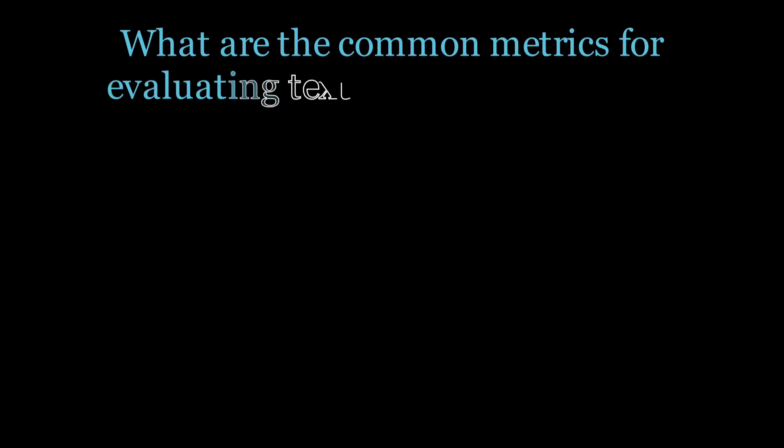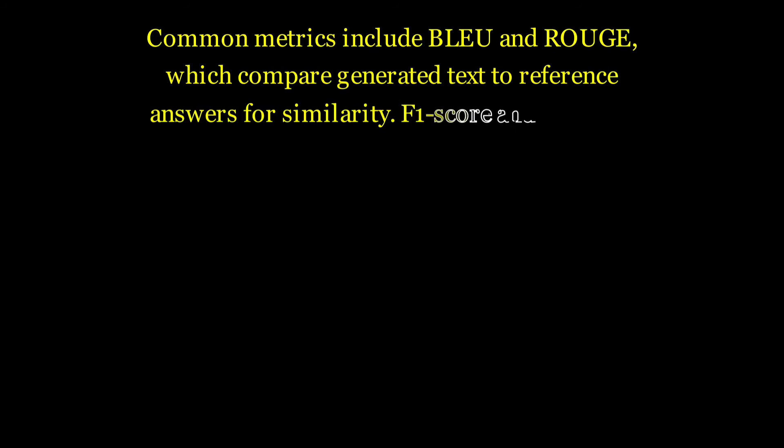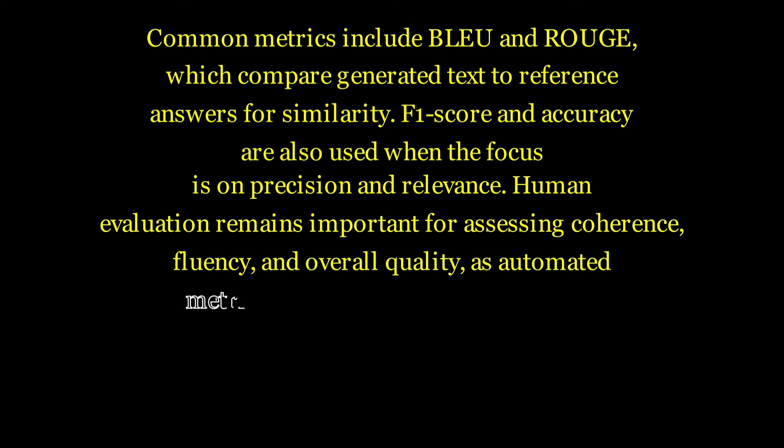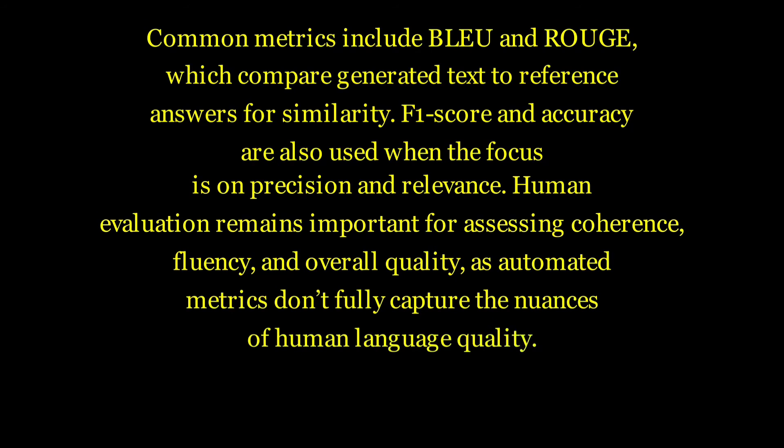What are the common metrics for evaluating text generation models? Common metrics include BLEU and ROUGE which compare generated text to reference answers for similarity. F1 score and accuracy are also used when the focus is on precision and relevance. Human evaluation remains important for assessing coherence, fluency, and overall quality as automated metrics don't fully capture the nuances of human language quality.